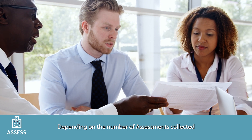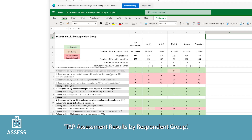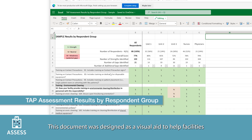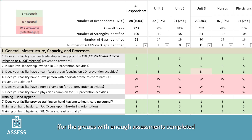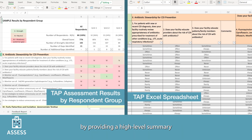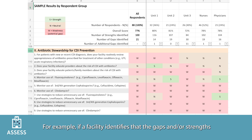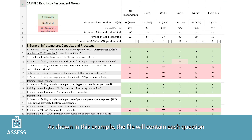Depending on the number of assessments collected from different respondent groups, some facilities may also receive an additional Excel file called 'TAP Assessment Results by Respondent Group.' This document was designed as a visual aid to help facilities review TAP assessment results for various respondent groups simultaneously. This supplements the TAP Excel spreadsheet by providing a high-level summary and should be used alongside it. If a facility identifies that gaps or strengths vary widely for a respondent group, it may be helpful to return to the TAP Excel spreadsheet and filter responses for detailed question frequencies.